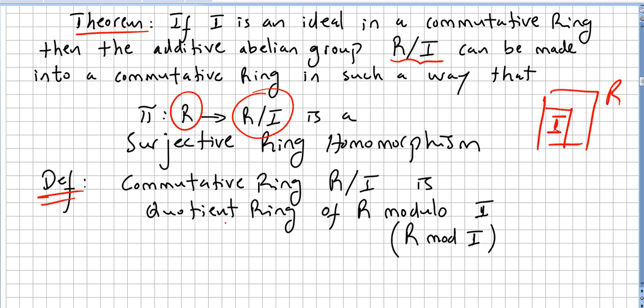This is the quotient ring or division ring of R modulo I. The commutative ring is called the quotient ring, and pi will be a homomorphism. This is more or less like in the group quotient.